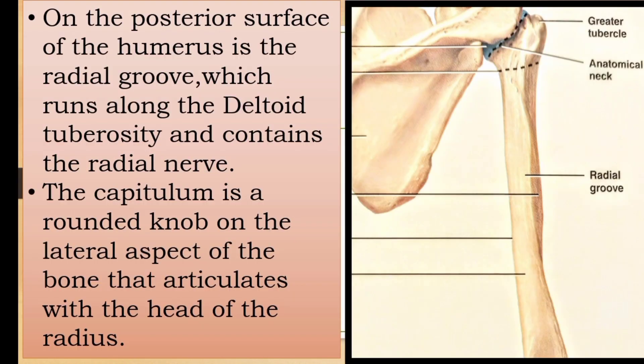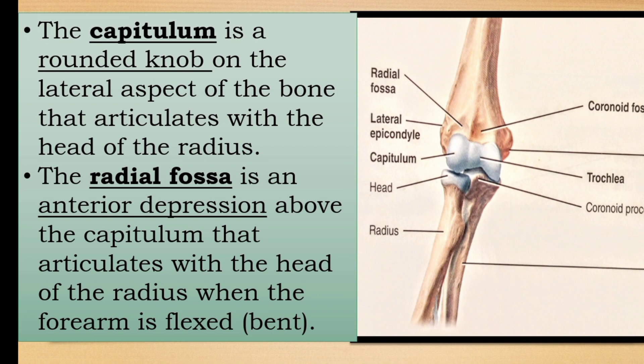On the posterior surface of the humerus there is a radial groove that runs along the deltoid tuberosity. The radial nerve passes through this radial groove.